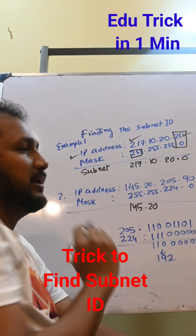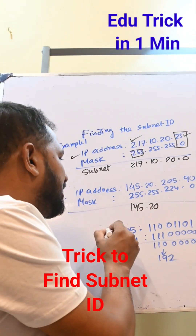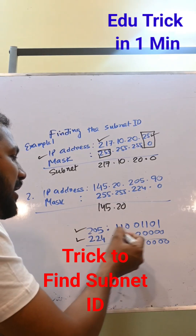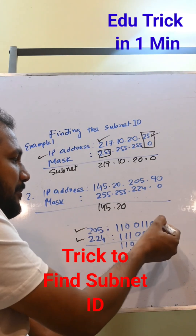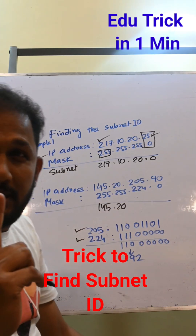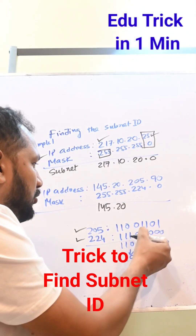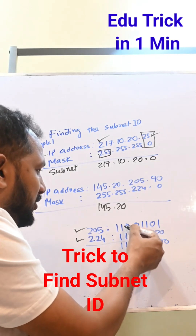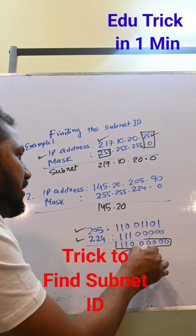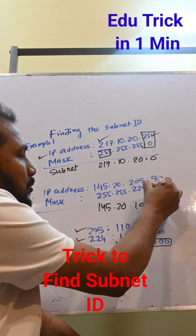Here the octet is neither 0 nor 255, so we take the binary representation of both the IP octet (210) and the subnet mask octet (224) and perform a logical AND. Logical AND means if both bits are 1, we choose 1, otherwise 0. The result gives us 11000000 in binary, which equals 192 in decimal. So we choose 192.